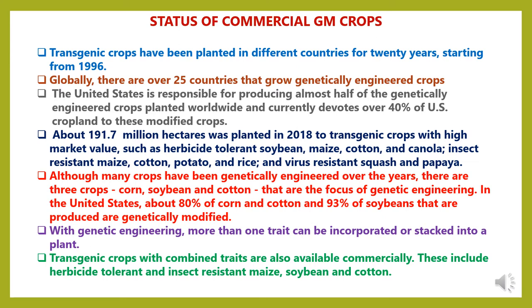Now we will go through the status of commercial genetically modified crops. Transgenic crops have been planted in different countries for over 20 years, starting from 1996. Globally, there are over 25 countries involved in producing genetically modified crops. The United States is responsible for producing almost half of the genetically engineered crops planted worldwide and currently devotes over 40% of US cropland to these modified crops. About 192 million hectares of area was planted in 2018 to transgenic crops with high market value, such as herbicide-tolerant soybean, maize, cotton and canola, and insect-resistant maize, cotton, potato and rice, and virus-resistant squash and papaya.